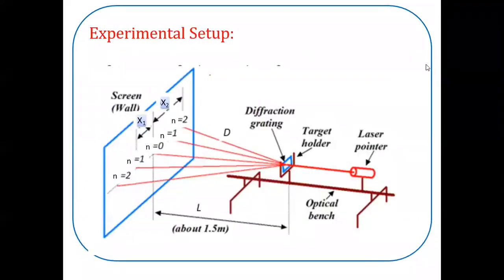Experimental setup is shown with the help of schematic diagram. It consists of an optical bench. At one end of the optical bench, it is fixed with a laser source. Other end of the optical bench is fixed with a screen. In between laser source and screen, diffraction grating is mounted.